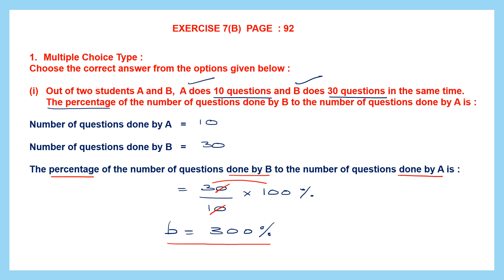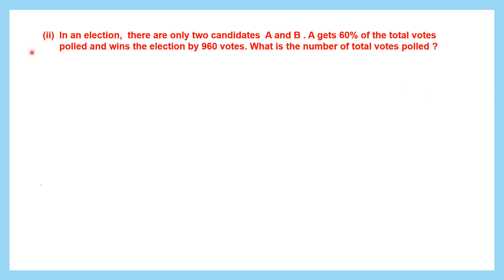So the answer is 300%, which is option B. Question 2: in an election with only two candidates A and B, A gets 60% of the total votes polled and wins the election by 960 votes.